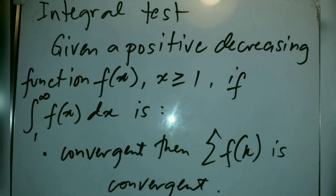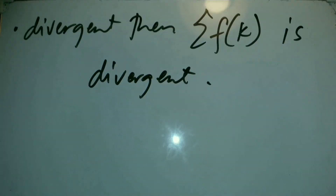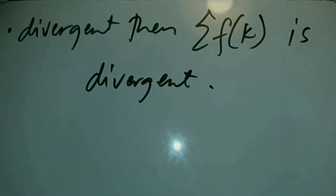We are now at the integral test. Given a positive decreasing function f(x) where x ≥ 1, if the integral of f(x) dx from 1 to infinity is convergent, then summation of f(k) is convergent; and if it is divergent, then summation of f(k) is divergent.